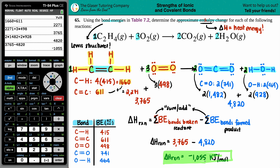This reaction is very exothermic, releasing roughly 1000 kJ/mol. It's a combustion reaction, so you know it's going to be exothermic because it produces fire. I hope this helps — let me know in the comments, subscribe to the channel, and tell your classmates and friends. We also have physics and math videos on the channel, with more subjects coming in the future. Thank you so much for your support!